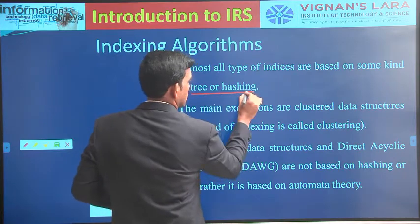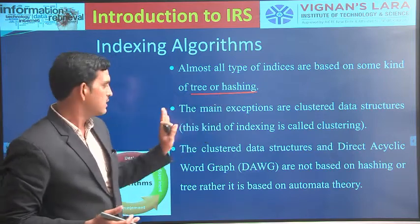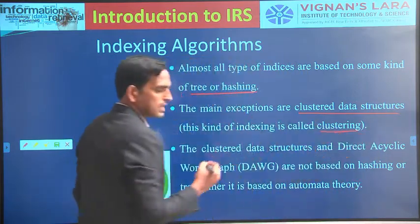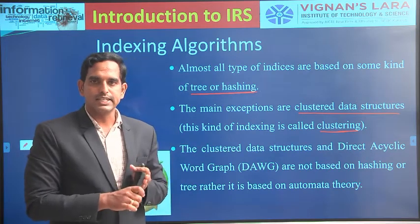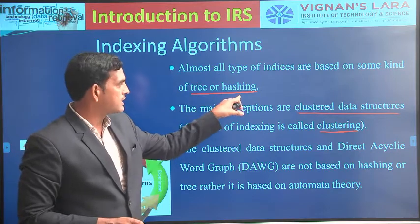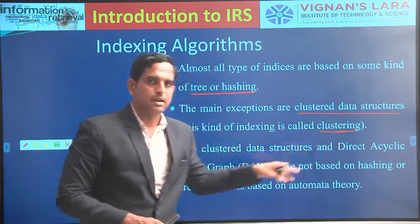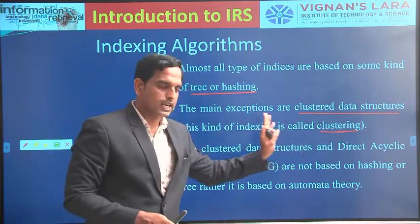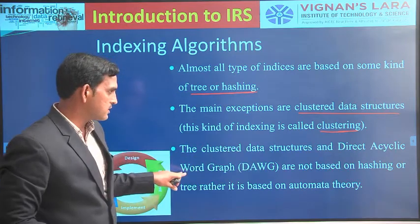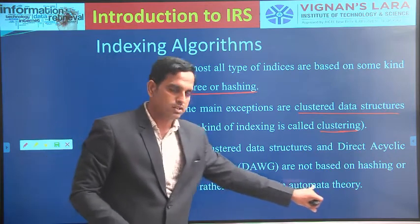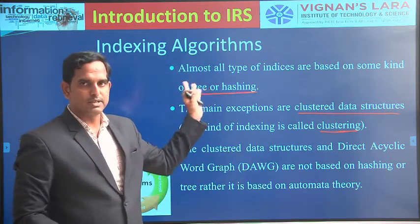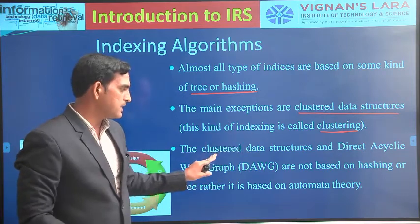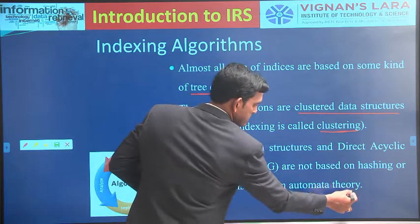Most retrieval algorithms use indexing algorithms that mostly use one of three types: tree indexing, hashing, or cluster data structures. This cluster data structure doesn't implement tree or hashing — it implements based on automated theory. So retrieval algorithms will use one of these three types of indexing: tree indexing, hashing, or clustering.